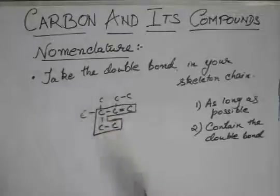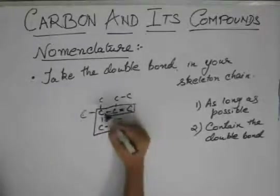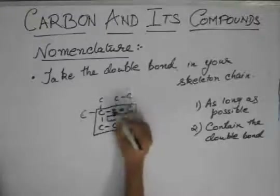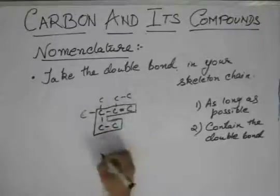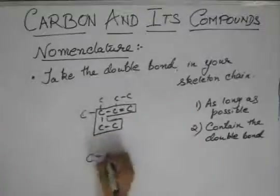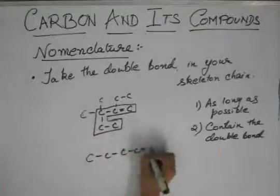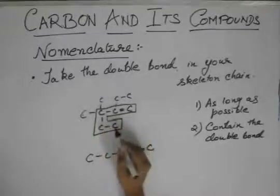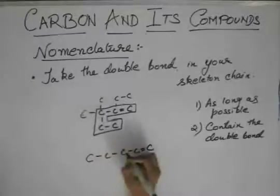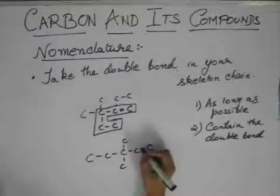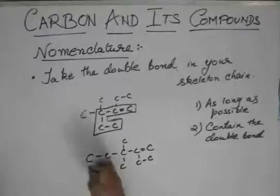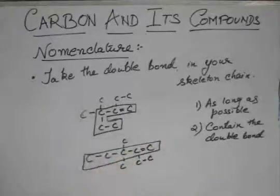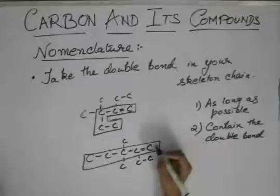This should be our chain of concern. These chains both contain the double bond, but they are four-membered chains and this is a five-membered chain. If we make this chain the straight one, we get one, two, three — the third carbon has two methyl groups and there is an ethyl group. So we take this chain as our skeleton chain.